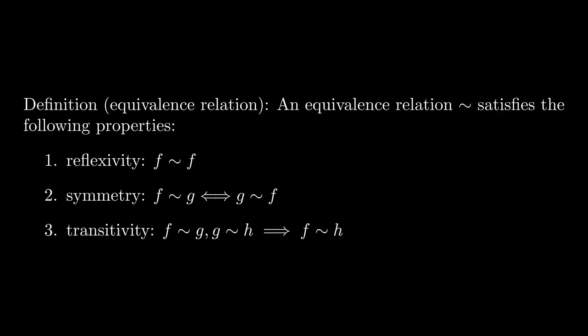f equals Theta(g) is also an example of something called an equivalence relation, another type of mathematical construct which instead obeys the following three properties: reflexivity, symmetry, and transitivity.